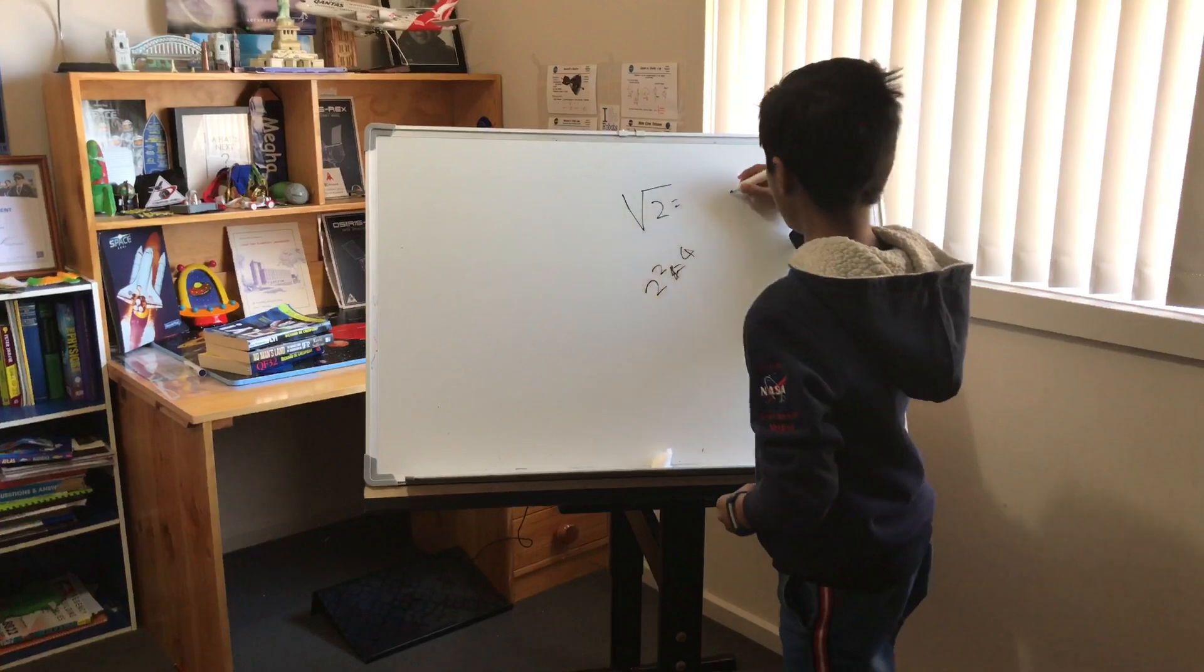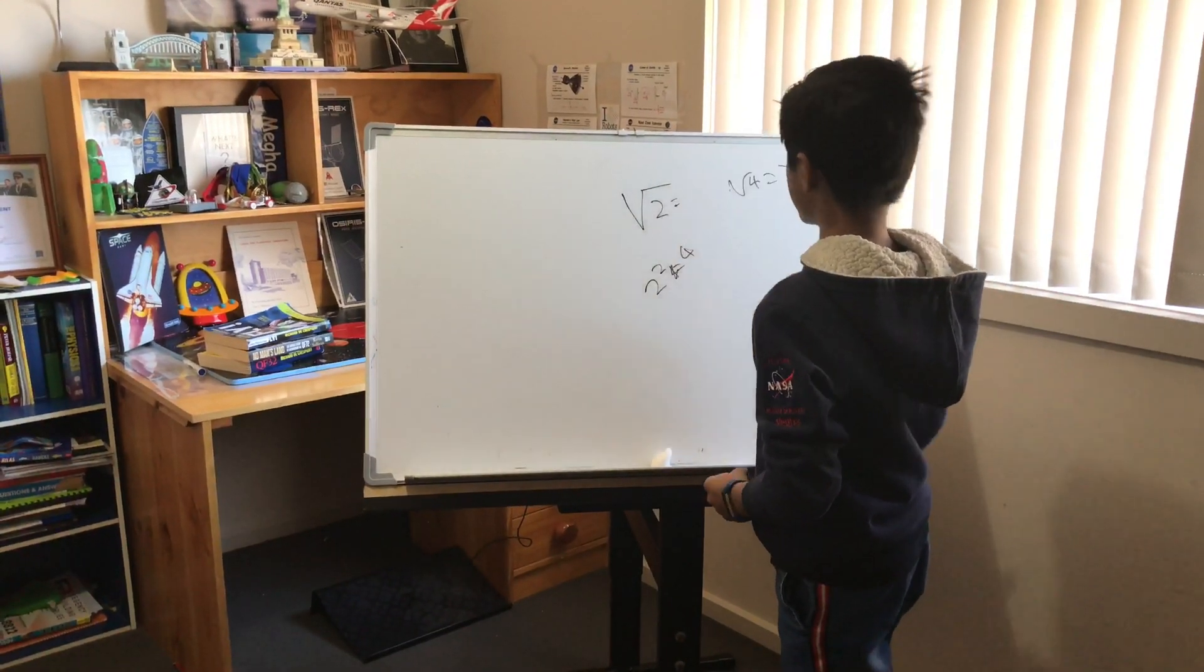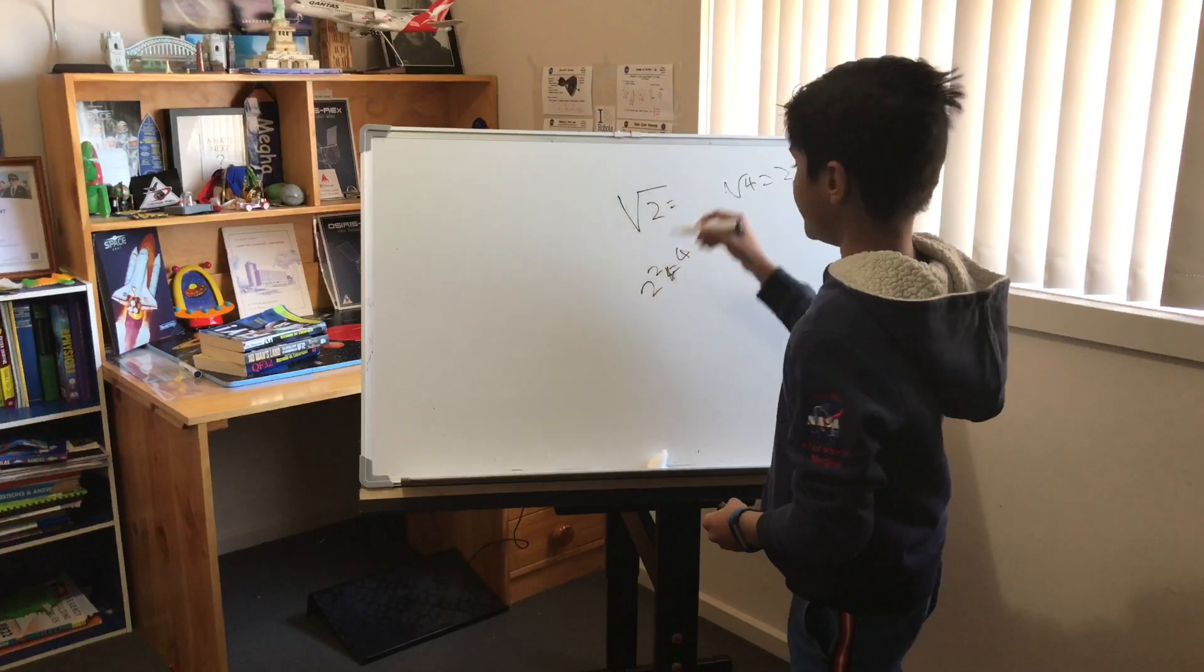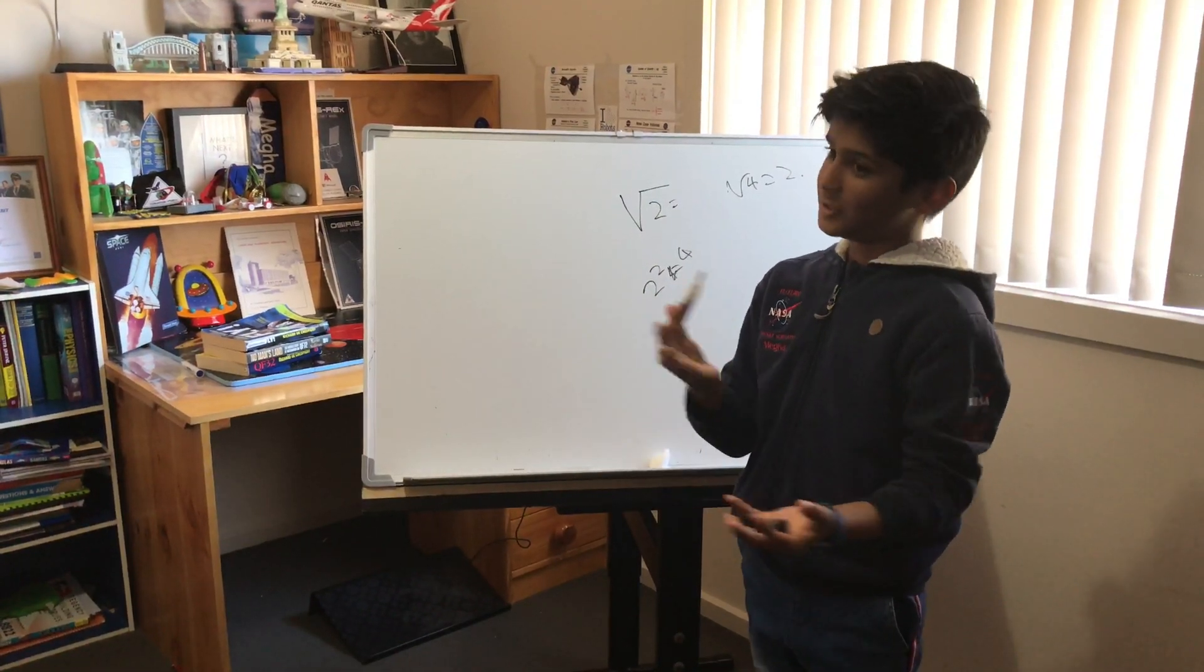So if we take the square root of 4, that equals 2. But the square root of 2 equals something else, and it does equal something.